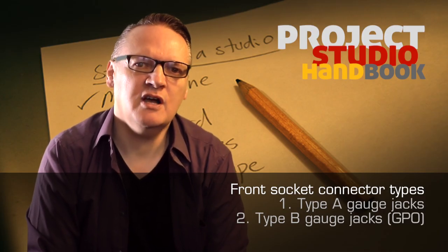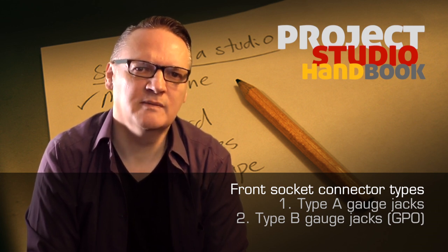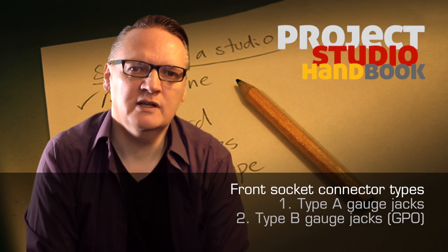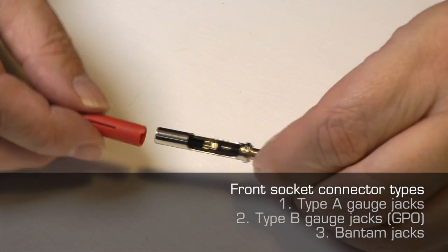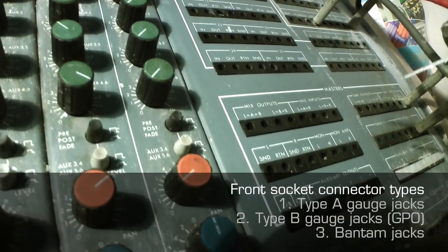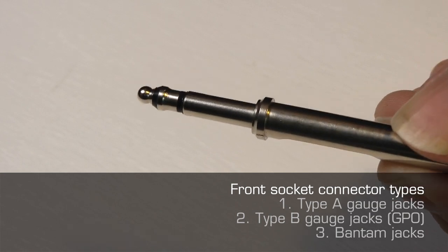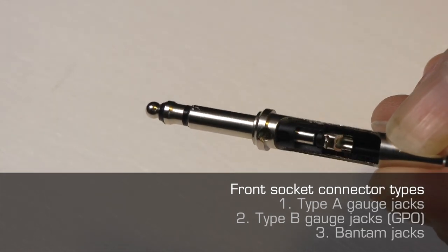You should never insert a type A gauge jack into a type B gauge socket. And lastly, Bantam jacks. Essentially a mini version of the type B GPO jack developed by mixing desk manufacturers to allow a greater density of sockets in a small area.